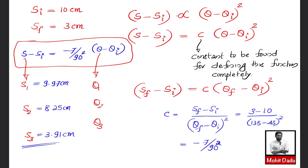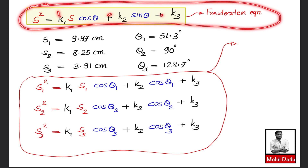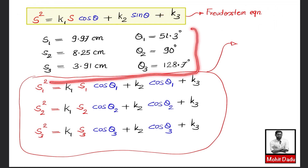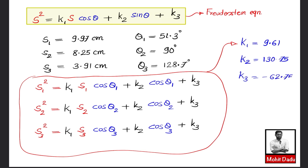With all precision points known, we substitute (s1, θ1), (s2, θ2), and (s3, θ3) into the Freudenstein equation to form three simultaneous equations in k1, k2, and k3. Solving these simultaneously gives: k1 = 9.61, k2 = 130.75, and k3 = −62.75.